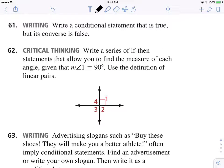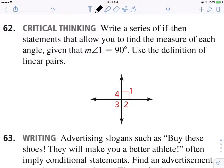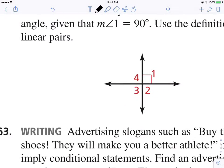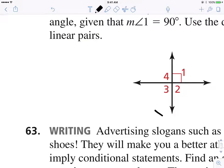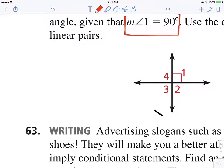So using that definition of linear pairs, let's write a couple of if-then statements to find all of the measure angles. Angle one, angle two, angle three, and angle four. So what do we know? We know that the measure of angle one is 90 degrees.